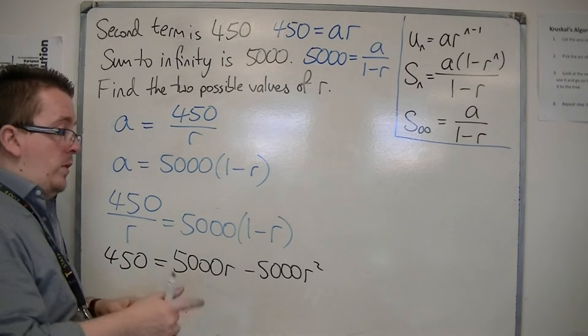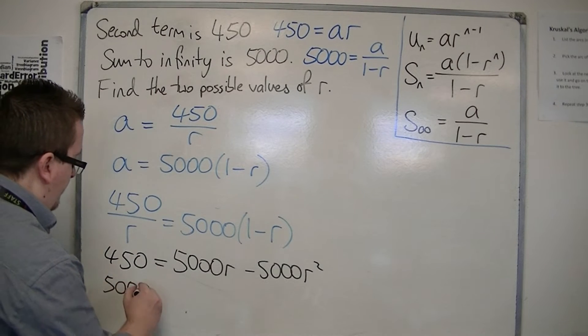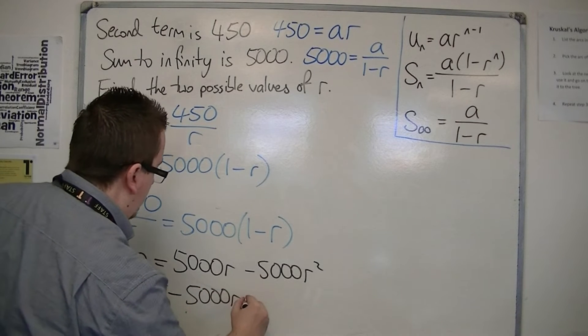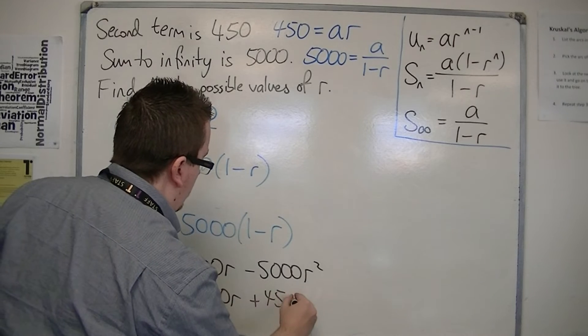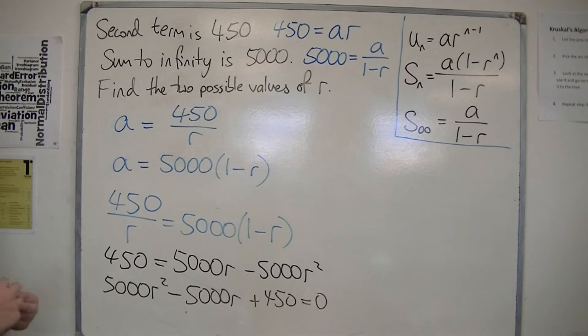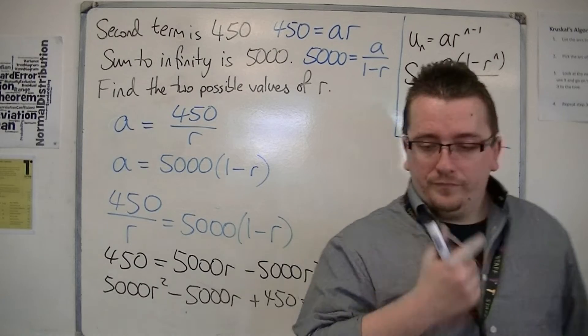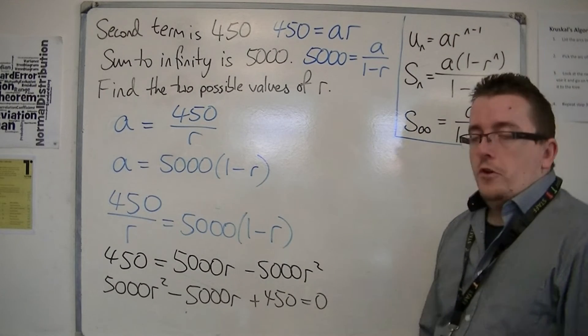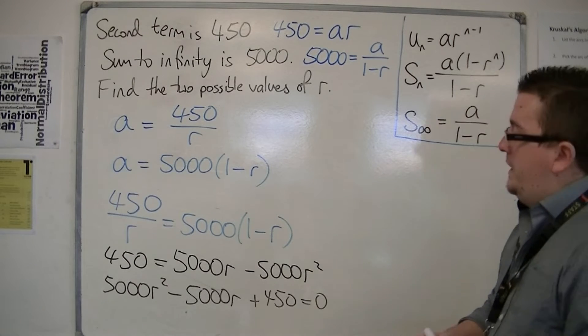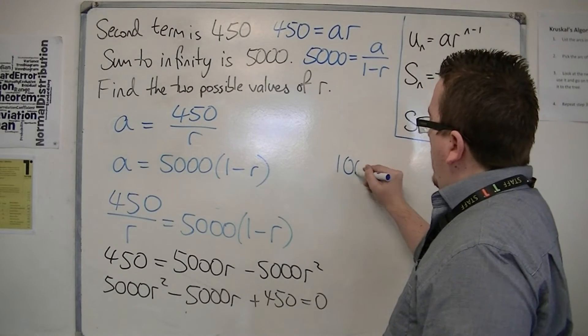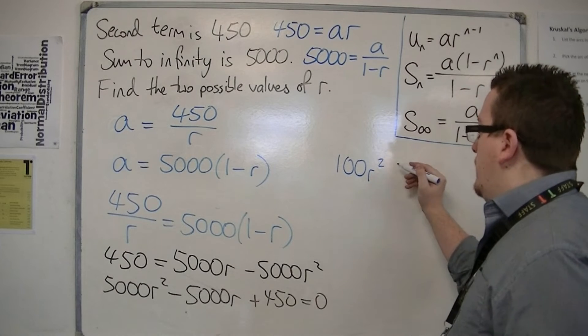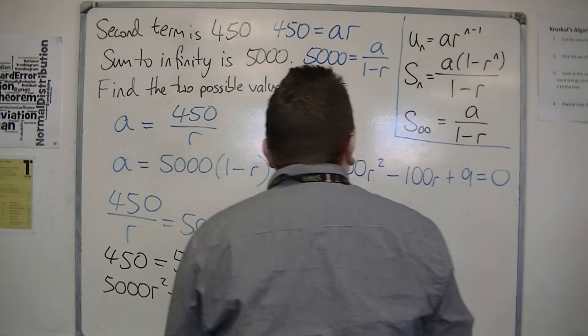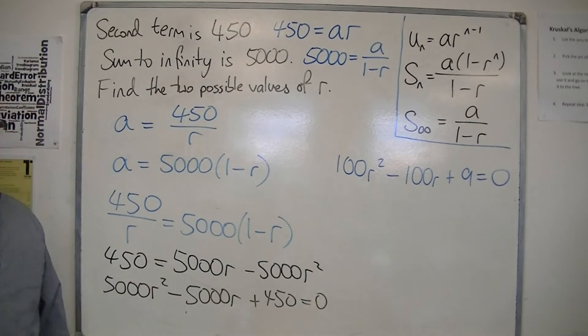Now, if I rearrange that, make it a little bit nicer, 5000 r squared minus 5000 r plus 450 is 0. So, I've thrown everything onto the left-hand side of the equation. This isn't looking very pretty. So, I'm going to divide through by 50 and get left with 100 r squared minus 100 r plus 9 is 0. It looks a little bit nicer, but still not very nice.